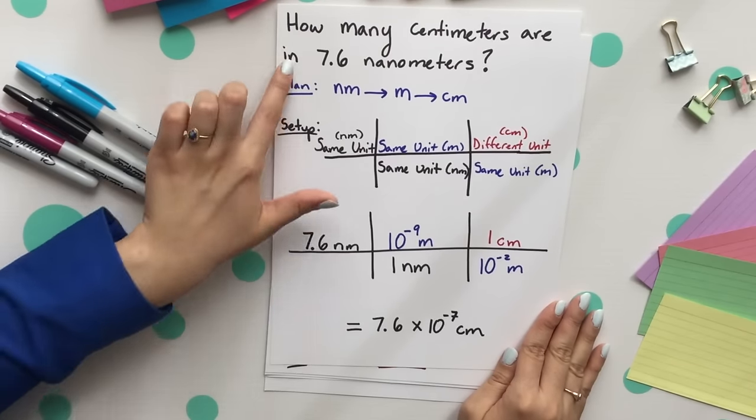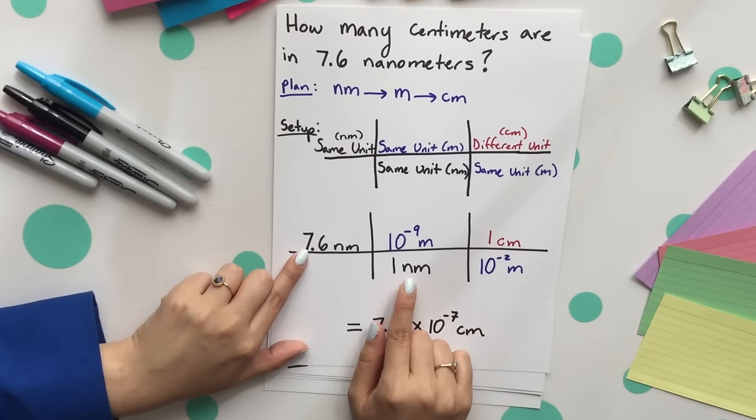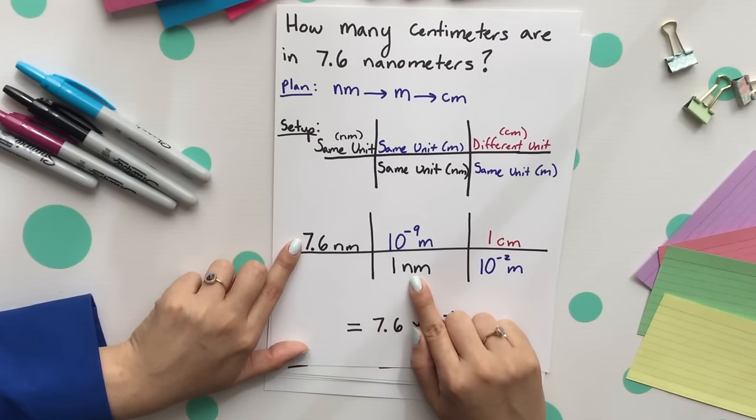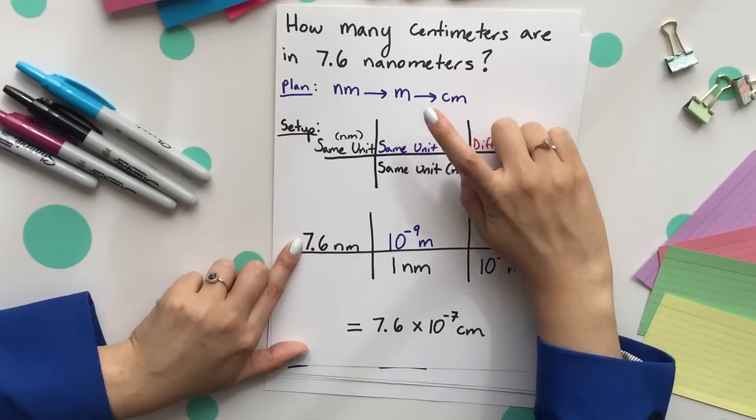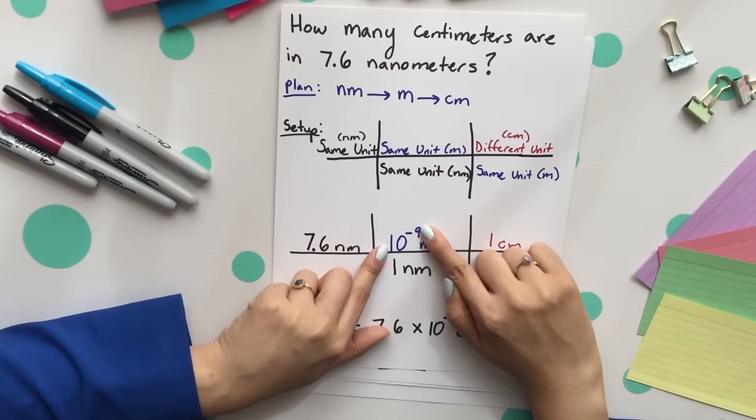We're going to start with our given which is 7.6 nanometers. We want to place the nanometers across from each other. Notice that we will have that one going with our different unit which in this case is nanometers. Next, we're going to go to our meters which is our base unit and we'll have that 10 to the negative 9th on top.